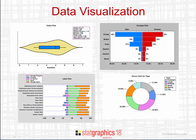Other new plots include a violin plot, which combines a box and whisker plot with a nonparametric density estimator. We've also added a tornado plot to compare the distribution of categorical data in two samples, for example, men and women. In the bottom left is a Likert plot, which shows the results of a survey where participants were asked to rank their opinion on a Likert scale from strongly agreed to strongly disagreed. In the bottom right is a donut chart, which is similar to a pie chart but more visually appealing.